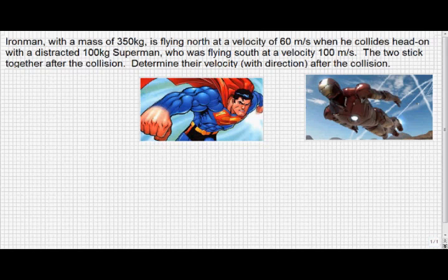Let's take a look at a collision problem now between Iron Man and Superman. Iron Man, with a mass of 350 kilograms, is flying north at a velocity of 60 meters per second when he collides head-on with the distracted 100-kilogram Superman, who is flying south at a velocity of 100 meters per second. The two stick together after the collision, therefore this is an inelastic collision. Determine their velocity with direction after the collision.